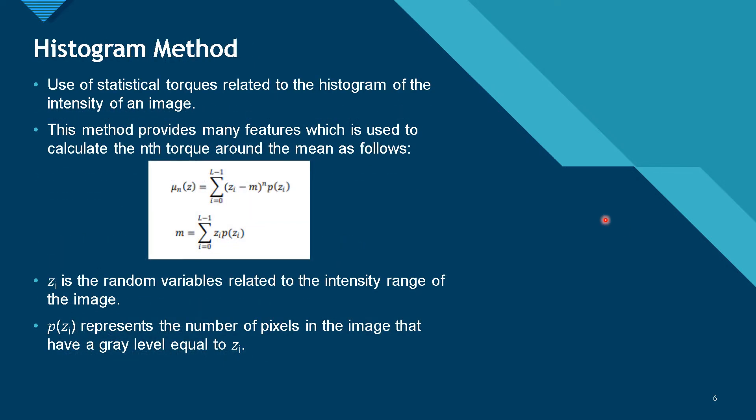In histogram method, we use a particular property, the histogram of an image, to calculate the image properties like smoothness, coarseness, entropy, and skewness. This method provides many features which is used to calculate the nth torque using the mean. This formula is the nth torque formula: U(n) of Z is equal to summation of i=0 to L-1 (Zi - M)^n times P(Zi). And here, we can get the mean for a particular pixel: M equals summation of i=0 to L-1 Zi times P(Zi). Here, Zi is a random variable related to intensity or gray value range of an image. P(Zi) represents the number of pixels in the image that have a gray value equal to Zi.